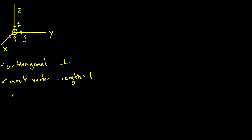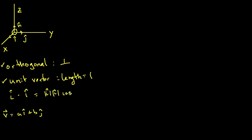Some interesting properties we can verify about base vectors: first, let's check that they're length one using the dot product. Remember we have i-hat — the hat represents that it's a unit vector. So i-hat dot i-hat equals the magnitude of i-hat times the magnitude of i-hat times cosine of the angle between them. The angle between them is zero degrees, cosine of zero is one, and since i-hat has magnitude one, this equals one. Similarly, j dot j equals one, and k dot k equals one.